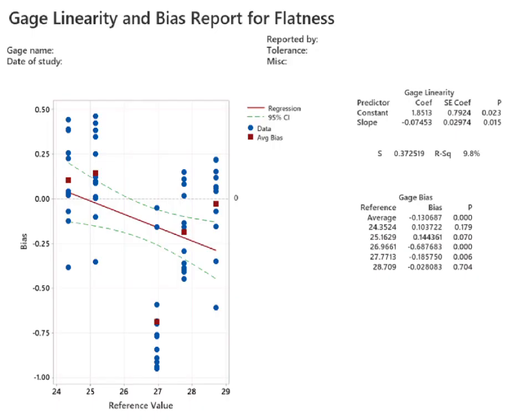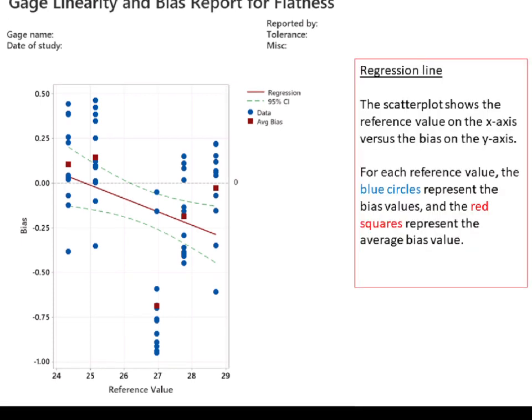Next, I will explain about the result of linearity and bias. Regression line: The scatter plot shows the reference value on the x-axis versus the bias on the y-axis. For each reference value, the blue circles represent the bias values, and the red squares represent the average bias value.